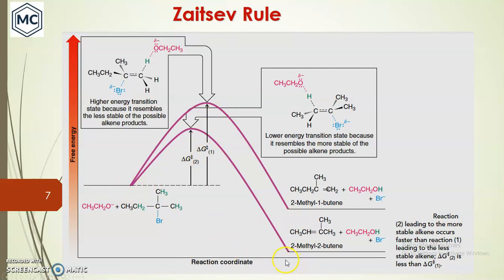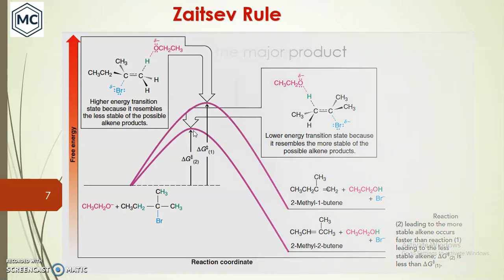The formation of the more substituted product can also be explained using an energy diagram, with reaction coordinate on the x-axis and free energy on the y-axis. The highly substituted product has lower energy and is more stable. Its transition state is also stabilized because the partial double-bond character carbon is stabilized by more substituents — three substituents versus one — so the transition state leading to the highly substituted product is more stable.